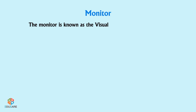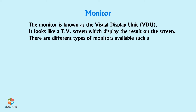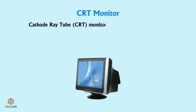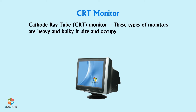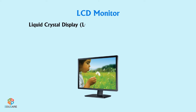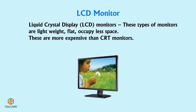Monitor: The monitor is known as the Visual Display Unit (VDU). It looks like a TV screen and displays results on the screen. Types include the CRT monitor (cathode ray tube), which is heavy and bulky and occupies more space, and the LCD monitor (liquid crystal display), which is lightweight, flat, occupies less space, but is more expensive than CRT monitors.